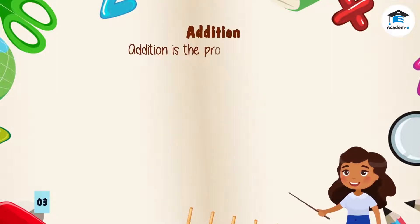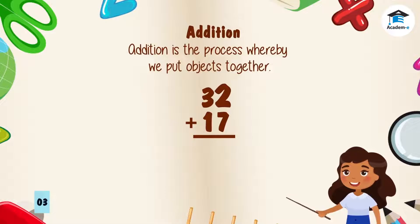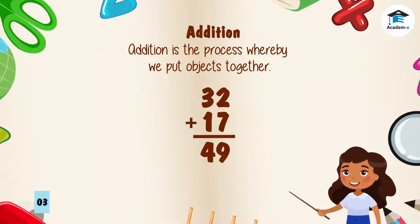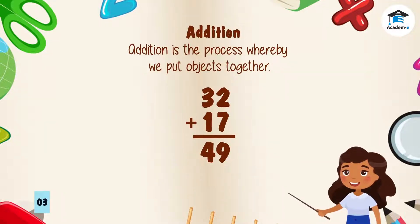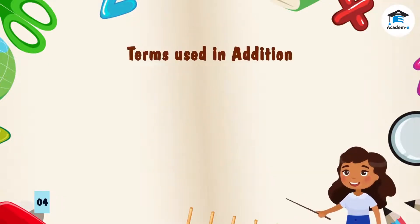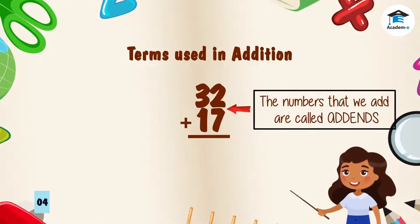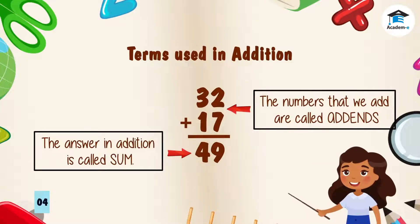Addition is the process whereby we put objects together. For example, let's add 32 and 17. Two plus 7 is equal to 9, and 3 plus 1 is equal to 4, so the sum of 32 and 17 is 49. The numbers that we add are called addends, and the answer in addition is called the sum.